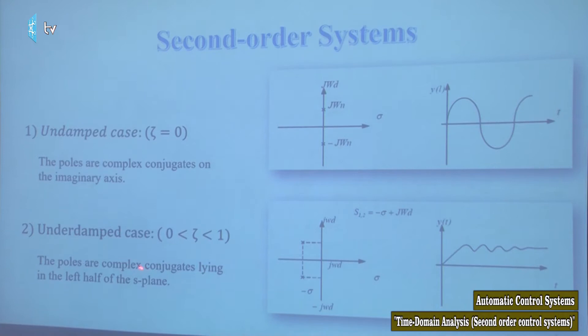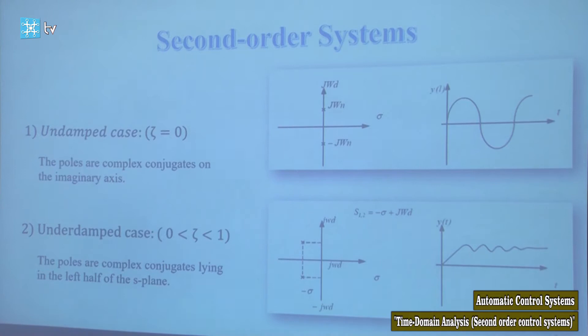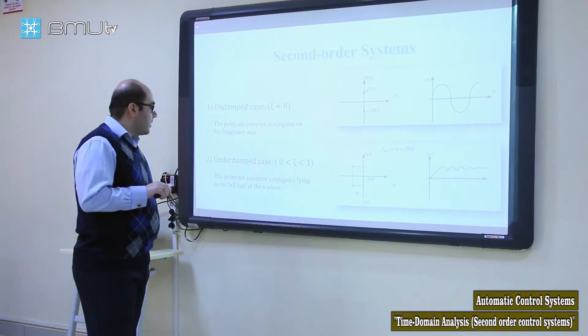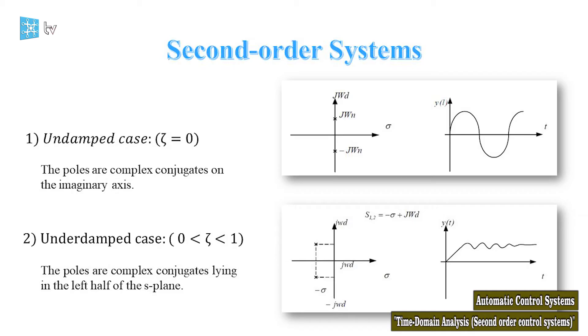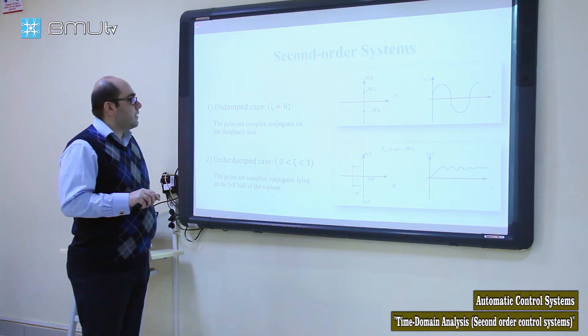The second case is when the poles are complex conjugates but lying in the left half of the s-plane — they have both real and imaginary parts. In this case, our response will be underdamped. After the transient time, our response will reach its final value.